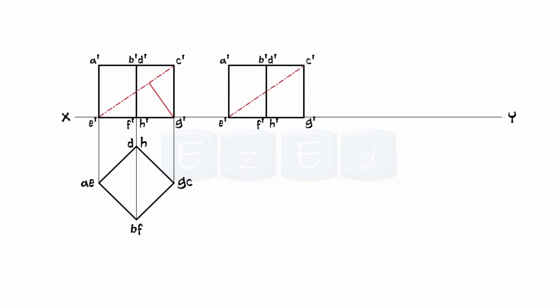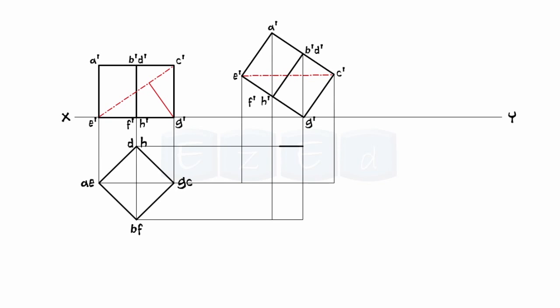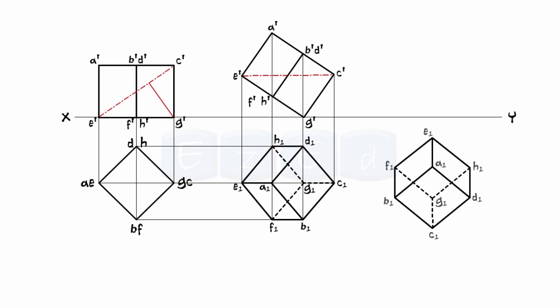Now in the second position, if we tilt the cube in such a way that this solid diagonal is parallel to the ground or horizontal plane, the projections of this cube will be as shown. Now in the third and final step, if we rotate the cube such that this solid diagonal becomes perpendicular to the vertical plane, then the projections of the cube are as shown.